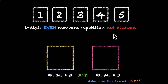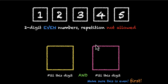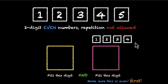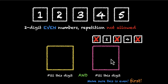This time we're not allowing the digits to repeat. Let's stick with the same approach — because there's a constraint, let's deal with the last digit first. From the digits 1, 2, 3, 4, 5, we cannot pick 1, 3, or 5. So there are two options for this — let's say it picks 2, so two ways.